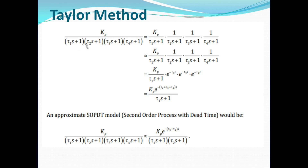Suppose it is a fourth order system. Using Taylor's method, the formula for converting a higher order system into a first order approximation is: Kp divided by (τ₁s+1) multiplied by e raised to minus (τ₂s). That means the first time constant τ₁ is retained in the denominator as the time constant of the first order system, and all remaining time constants are summed and added into the exponent of the dead time term.